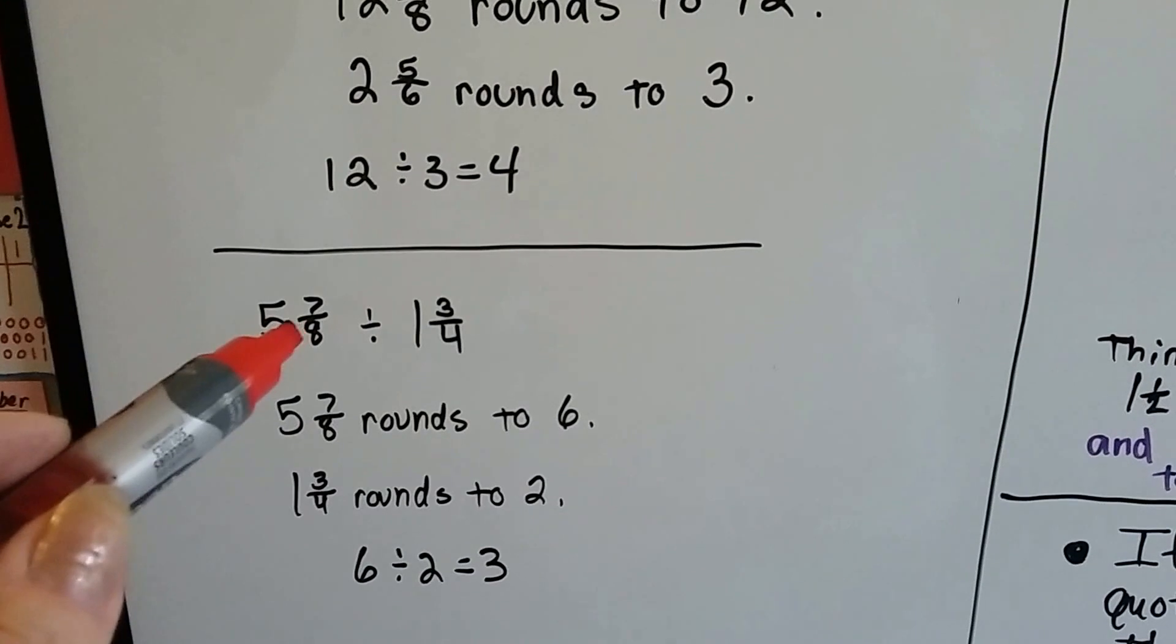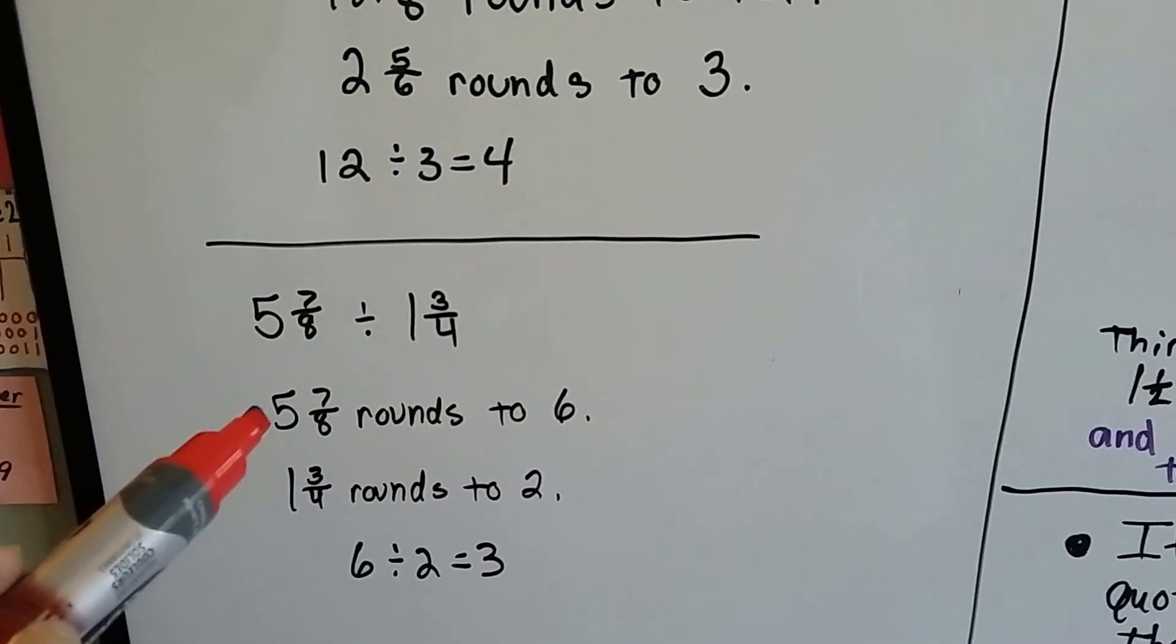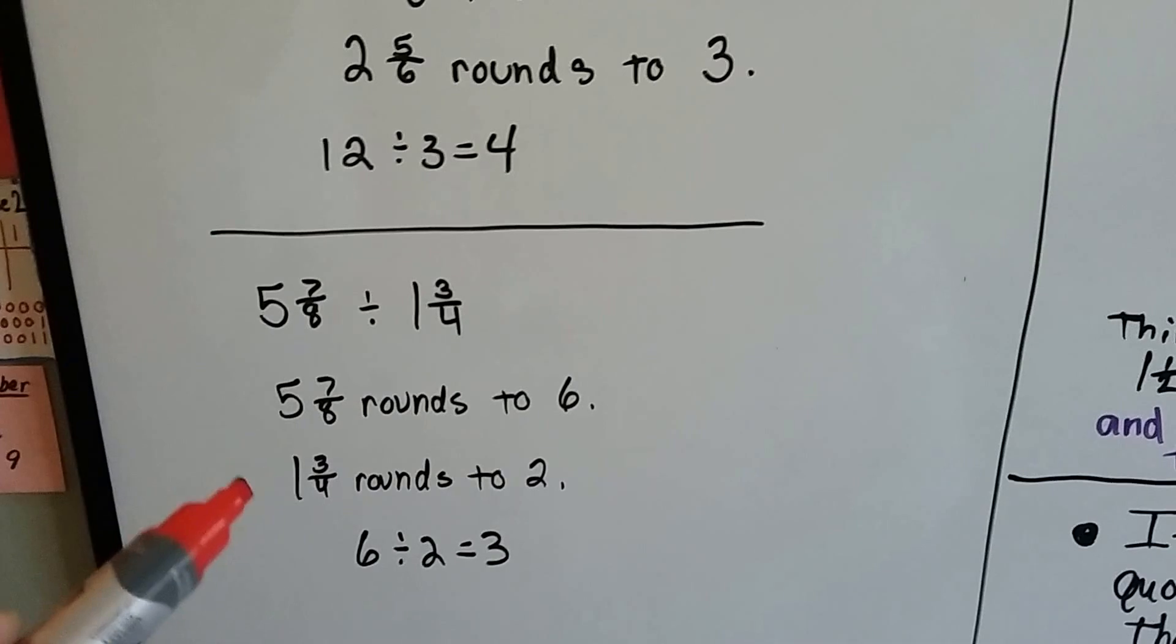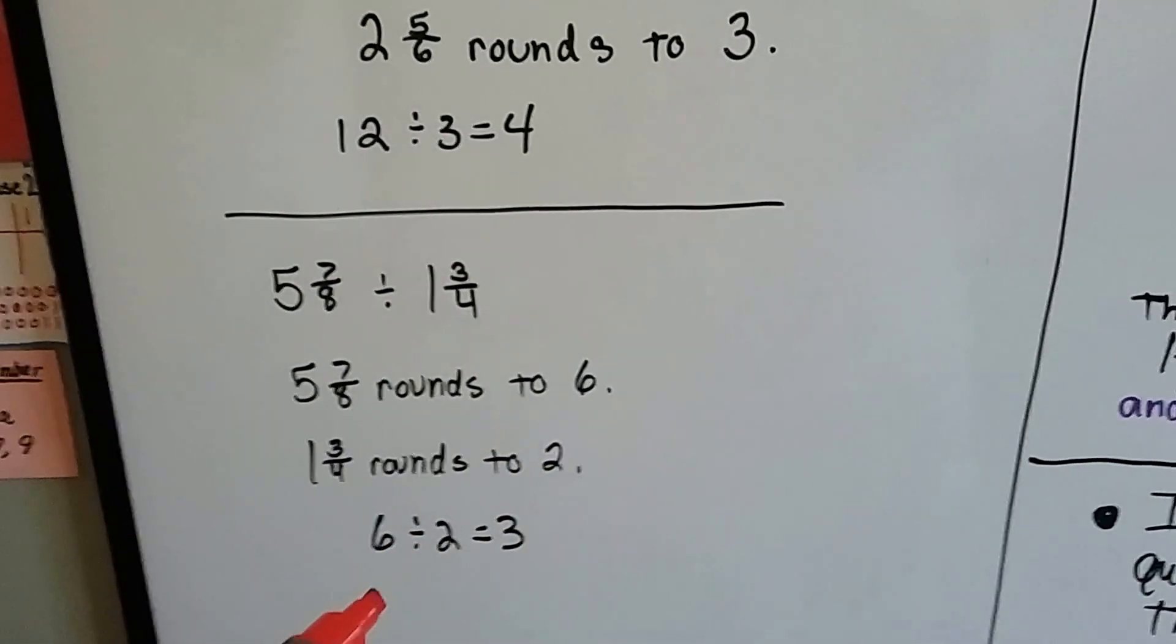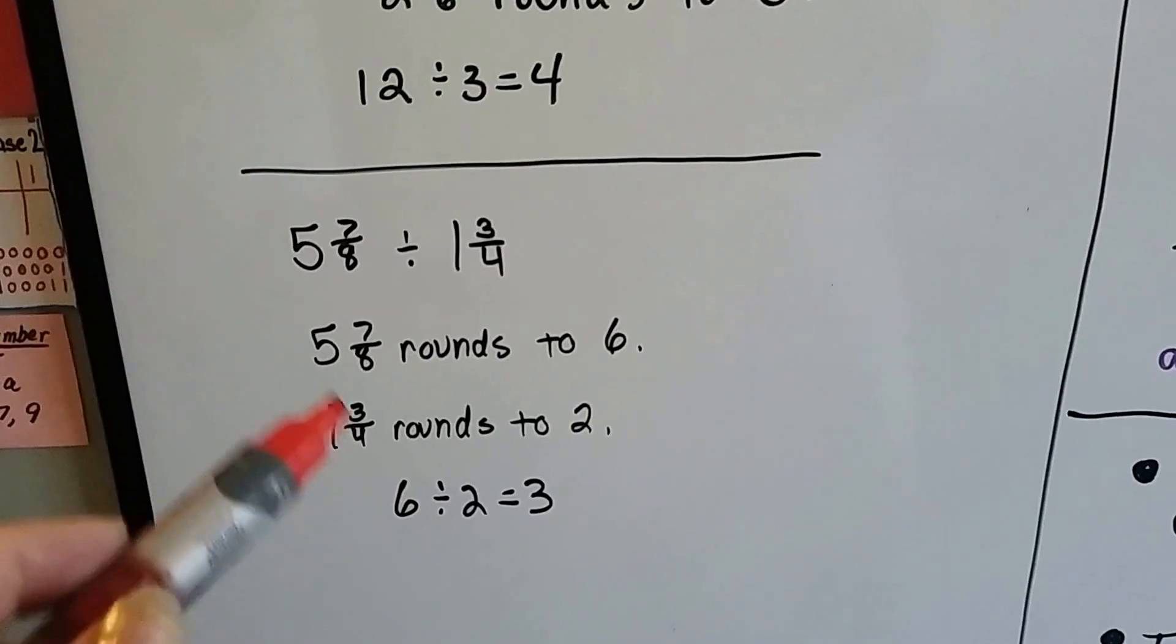If we have five and seven-eighths and we want to divide it by one and three-fourths, the five seven-eighths can round to six, the one and three-fourths can round to two, and then we just have six divided by two is three. A lot easier and quicker mentally.